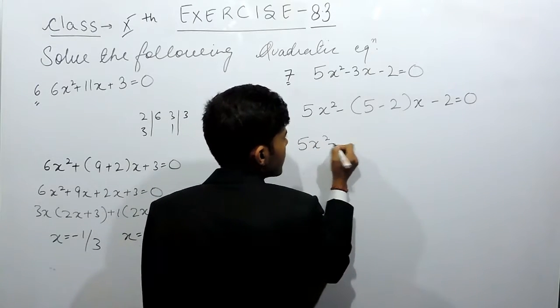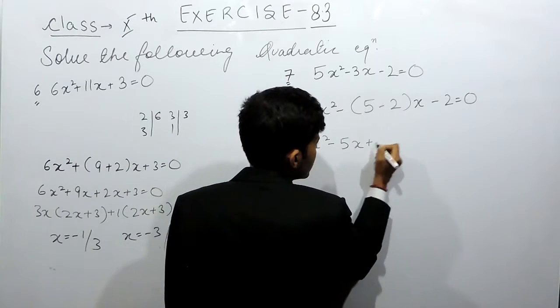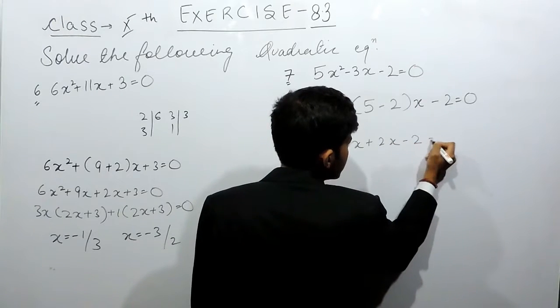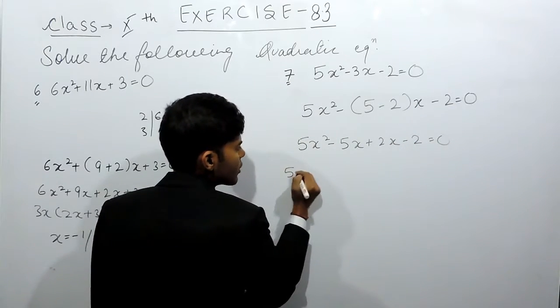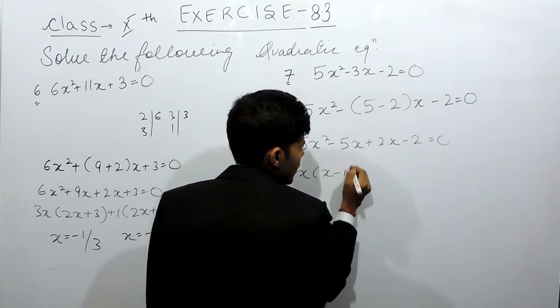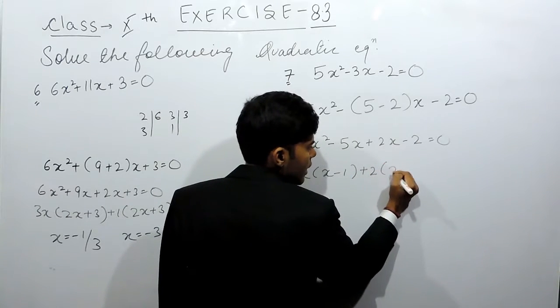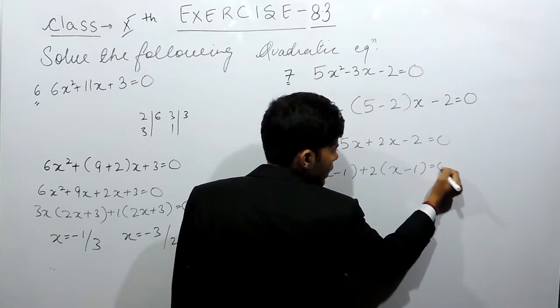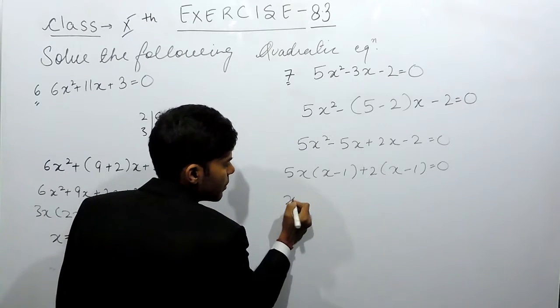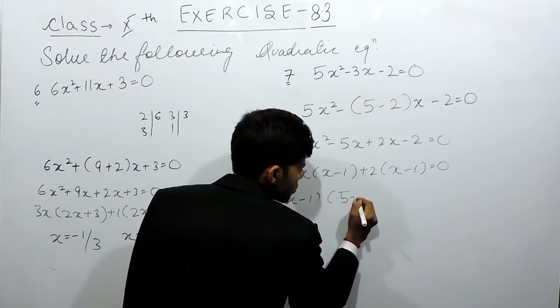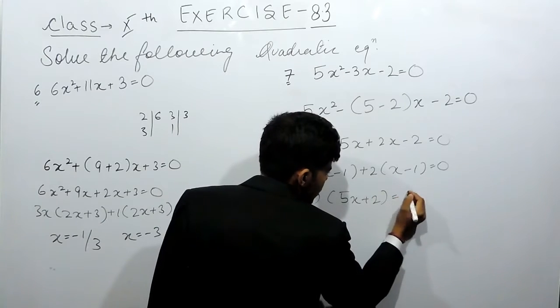5x² - 5x + 2x - 2 = 0. 5x common, x - 1, plus 2 common, x - 1 = 0. So it will be x - 1 and 5x + 2 = 0.